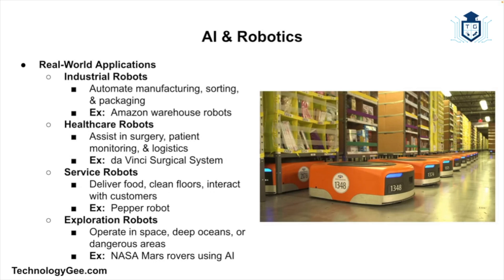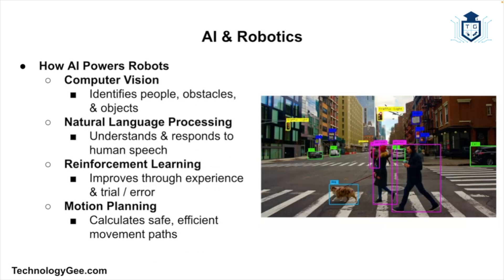Service robots include robots that clean, deliver, or even entertain. An example is SoftBank's Pepper robot, which can greet customers, answer questions, and even read emotions. Exploration robots are used in deep-sea research, space missions, and hazardous environments — for example, NASA's Mars rovers, which use AI to navigate terrain and collect samples.